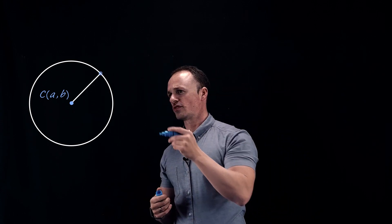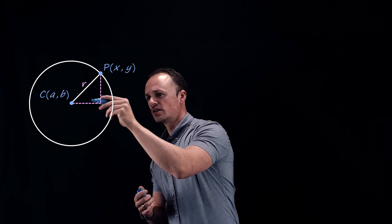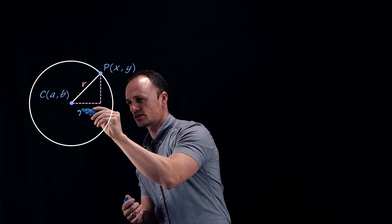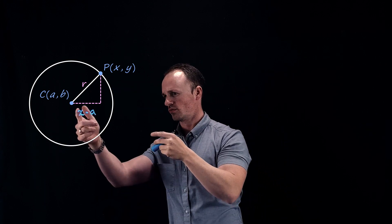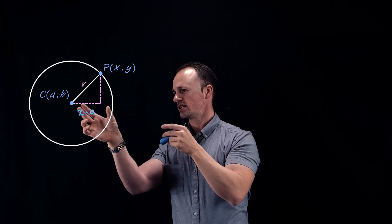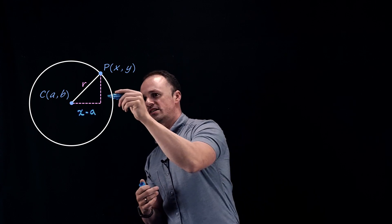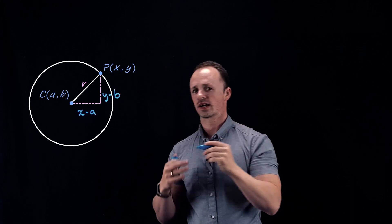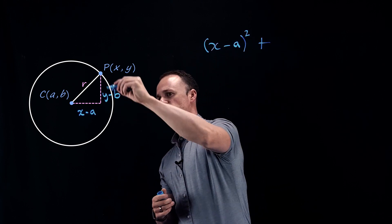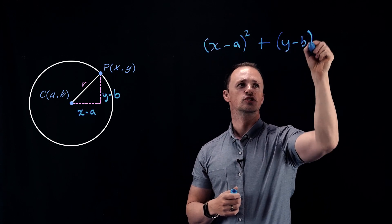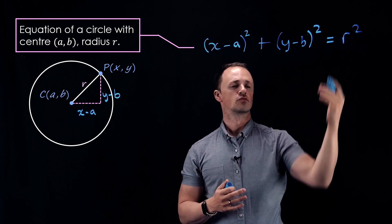If we assume there is a point on the circumference with coordinates x, y, then the distance we go across — from an x-coordinate of a to an x-coordinate of x — is x minus a. If that doesn't quite make sense, imagine this x-coordinate is 5 and this one is 3; to go from 3 across to 5 we need to go a distance of 2, which is 5 minus 3. To get from a y-coordinate of b up to a y-coordinate of y, we need to go y minus b. Using Pythagoras, we get (x − a)² + (y − b)² = r². This is the equation for a circle with centre (a, b) and radius r.